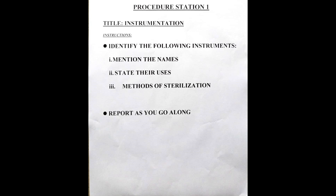The instruction in this procedure station says: number one, identify the following instruments. In the course of identifying them, you are expected to: one, mention the name of the instrument; two, state their uses; and three, state their method of sterilization. This is the pattern we're going to use while talking about the different instruments.